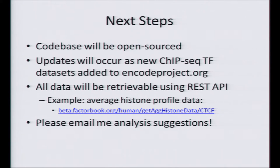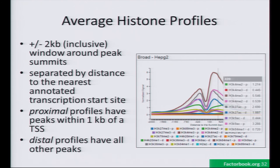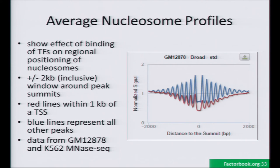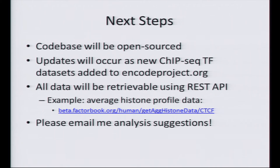The next steps for Factorbook: Factorbook will also be open sourced, and this will go in sync with the ENCODE project. As TF ChIP-seq datasets are released from ENCODE, we will immediately import them into Factorbook. As a new development, we're also giving this a full REST API, so all the profile information you can download via JSON and use yourself. You'll be able to download all the motifs and use them in your own projects, very similar to how you would parse JSON from ENCODE project. I'd really plead — if you have any new ideas for Factorbook that you'd like to see, just email me. I want to make this a more useful tool for the community.